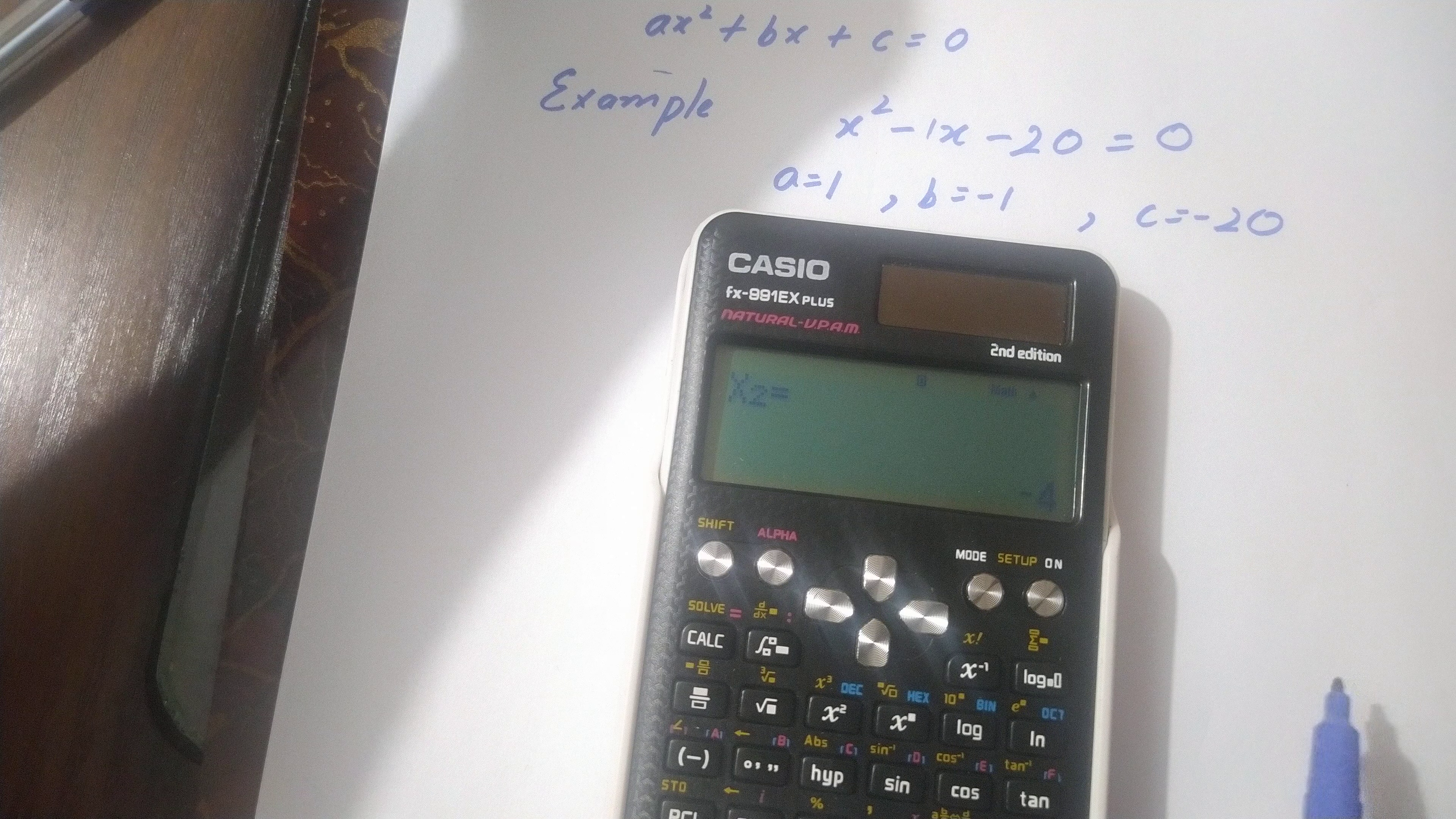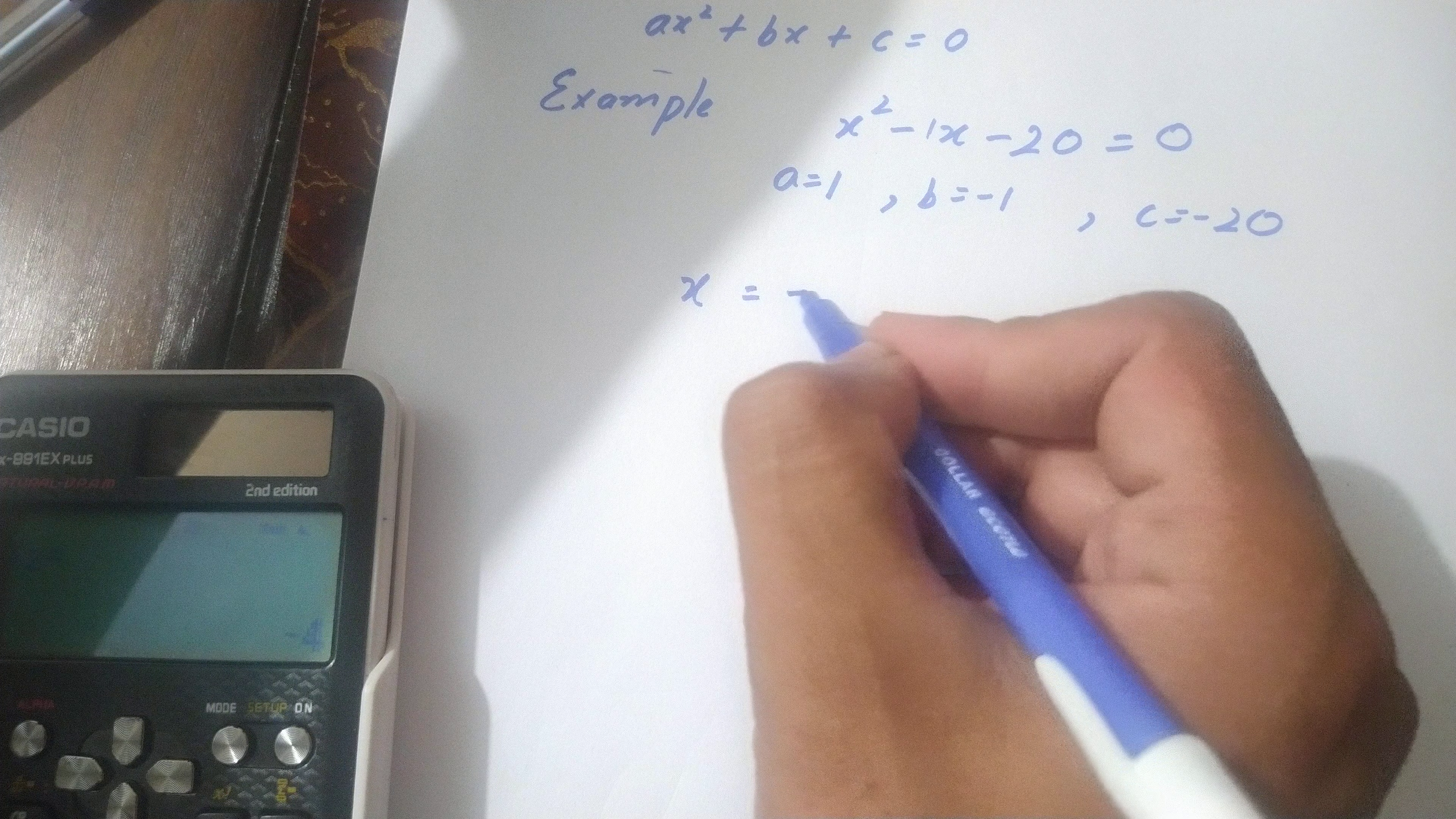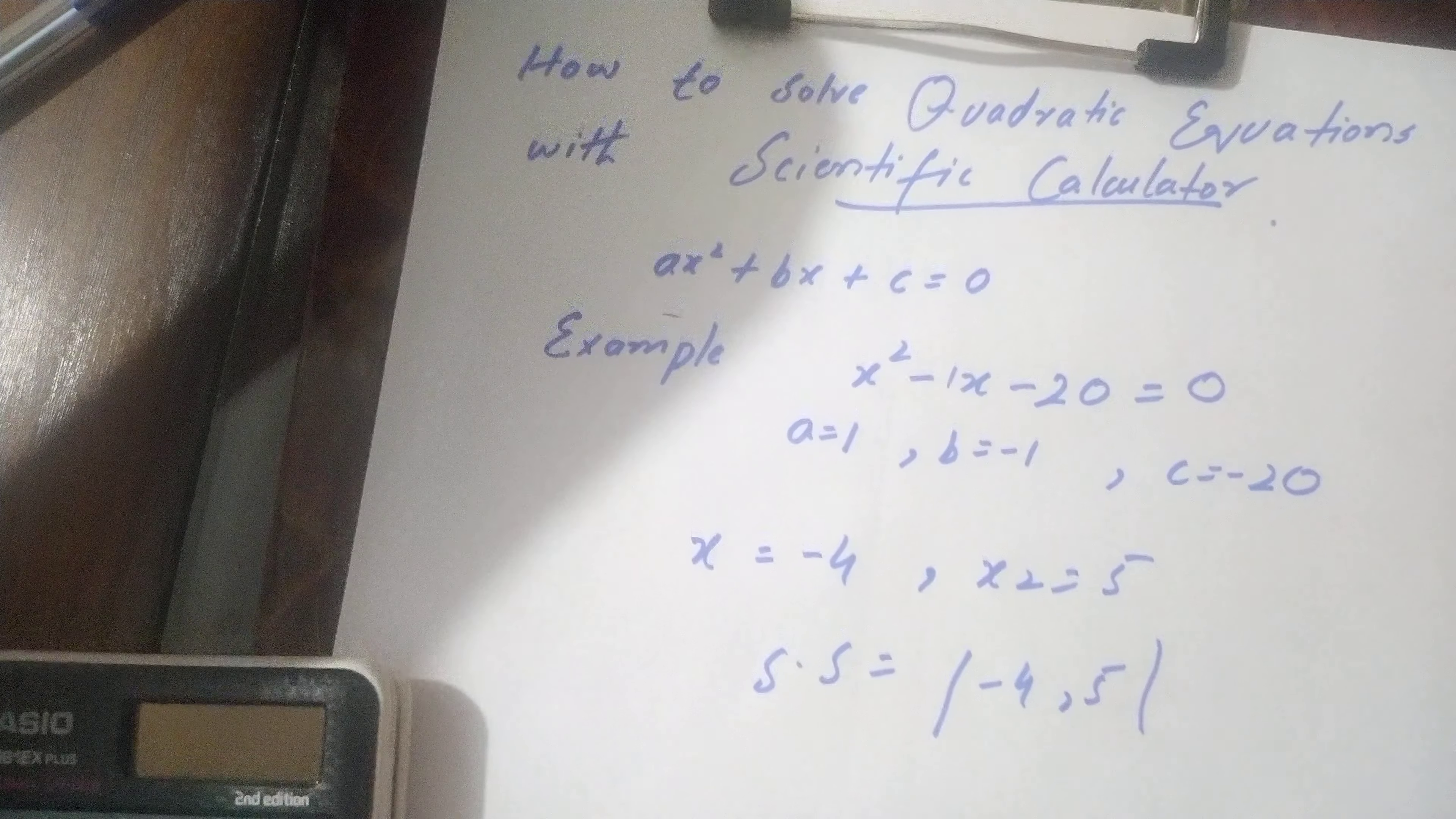x1's value is 5 and x2's value is minus 4. x1 is 5 and x2 is minus 4. So the solution set is minus 4 and 5.